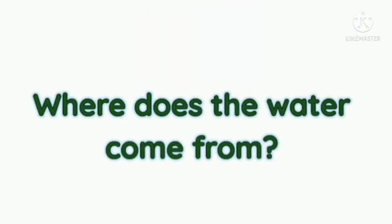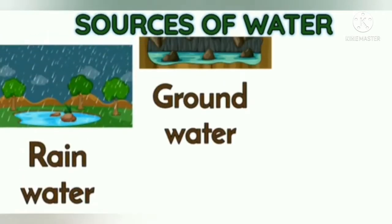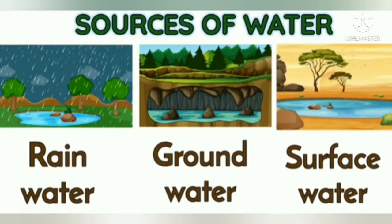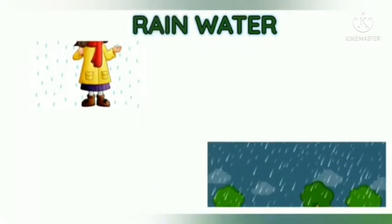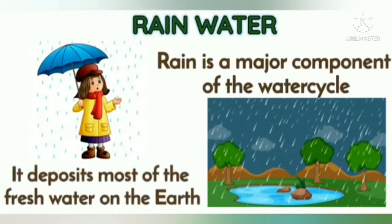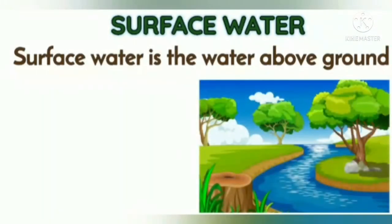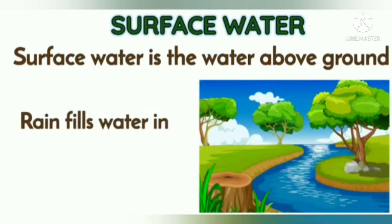Industrial purposes also use water. Now, where does the water come from? The sources of water are rainwater, groundwater, and surface water. Rainwater is a major component of the water cycle because it deposits most of the fresh water on the earth. When the sun heats up this water, it goes back to the clouds and falls back as rain.